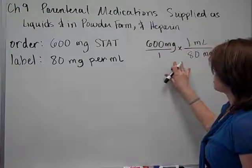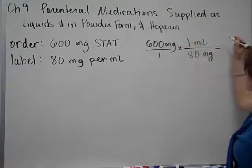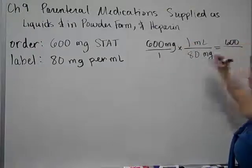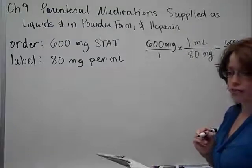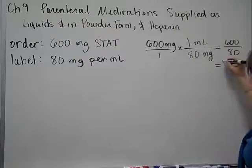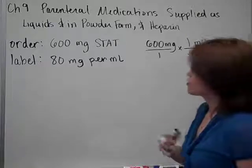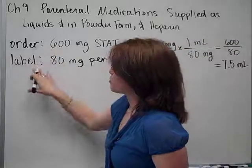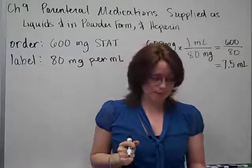So I've got this dimensional analysis set up. Multiplying straight across, 600 times 1, 1 times 80. I'll use my calculator to divide, and I happen to know that the answer is 7.5, and we're looking at milliliters. So basically, I take the doctor's order, use the concentration with it, and create dimensional analysis problem. Let's try one more.